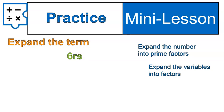I want you to try this one out. Try expanding 6rs. Remember to take the number and expand it into the prime factors and then take your variables and expand them apart. Try that out. What are the prime factors of 6? 6 is 2 times 3. So it would be 2 times 3 times r times s. Let's practice another one. 35mn. Pause and practice that one. Alright, 35 is an interesting number because the prime factors are 5 times 7. So it would be 5 times 7 times m times n. That is the expanded term, or the term expanded into its prime factors.